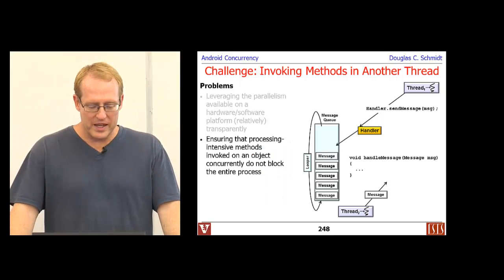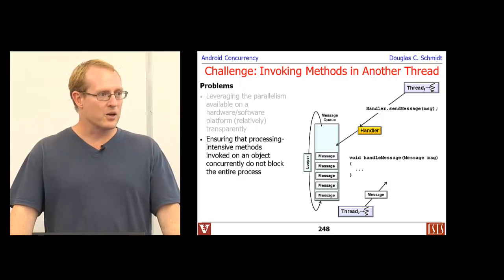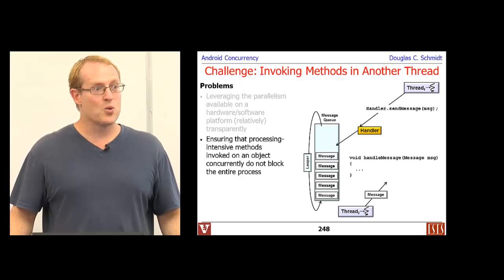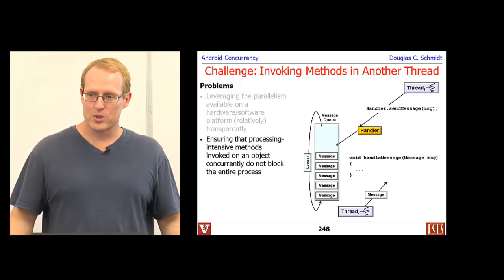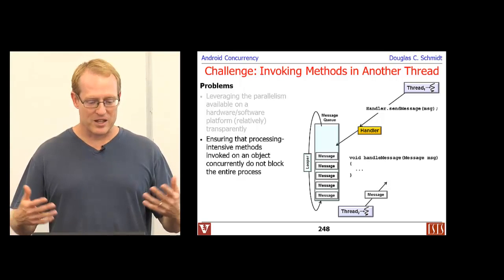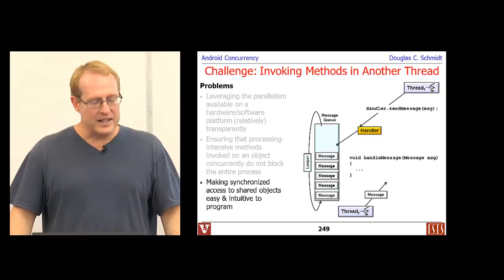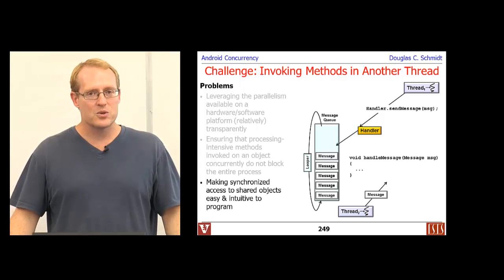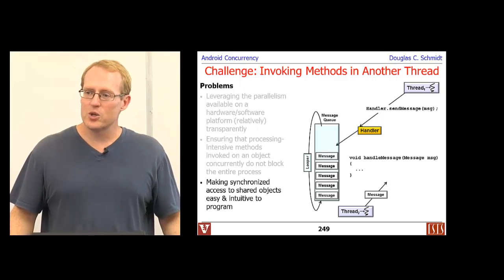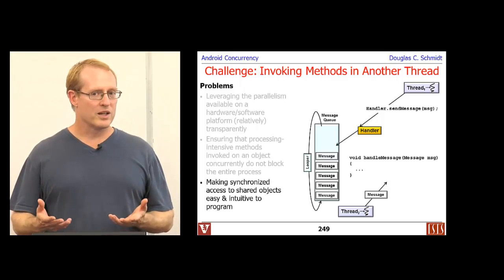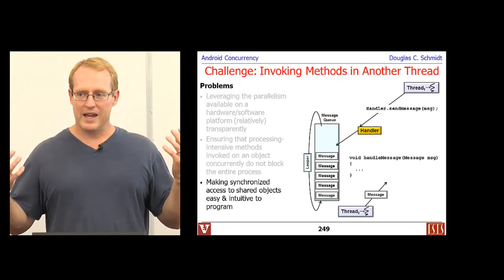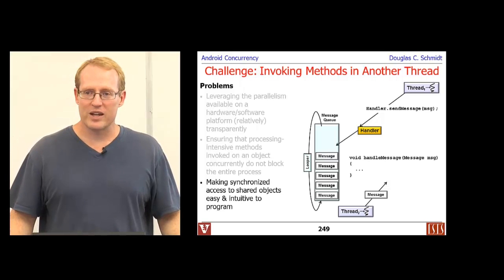Another thing we want to be able to do is ensure that long-running operations don't block other things in the process from executing. This is primarily relevant if you're trying to run things in the UI thread or in a single-thread solution where any one thread of control, if it were to block, would cause the whole process to hang. We also want to make access to these shared and synchronized objects as simple and intuitive as possible — people just want to make a method call and have the work execute in another thread of control.